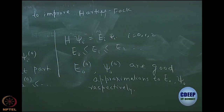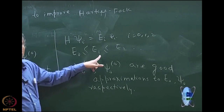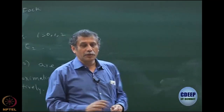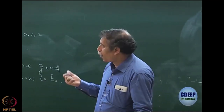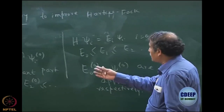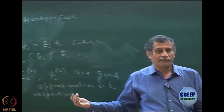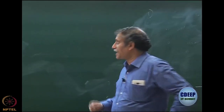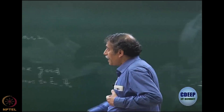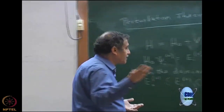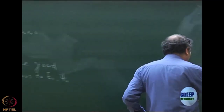Since we are only talking of ground state perturbation theory, we are not bothered whether E₁₀ is a good approximation to E₁ or not. I can only comment that E₁₀ is an approximation to E₁, but it will not be as good as E₀₀ is to E₀. We must be able to write the Hamiltonian in this split form — that is our first job — and then we will see the energy corrections.